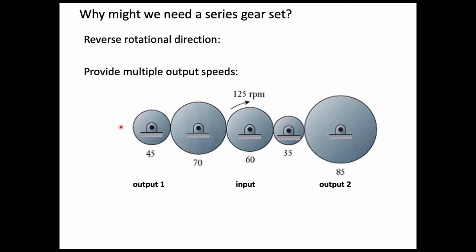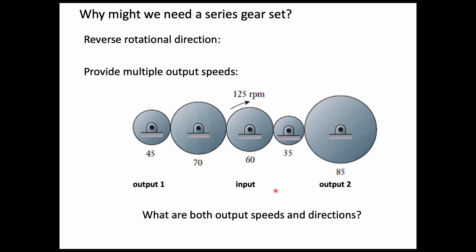Another reason for a series gear set is to provide multiple output speeds from the same input rotational power source. For instance, if the middle gear is the input and we have two different outputs — one on the left and one on the right — with idler gears in between, it's really just the ratio between the input gear and the final output gear that determines the speed ratio. The idler gears in between don't influence the output ratio.